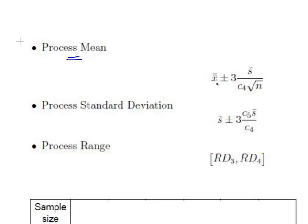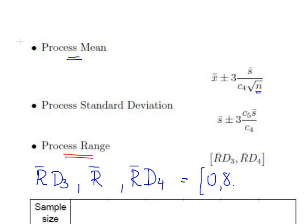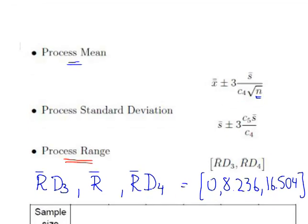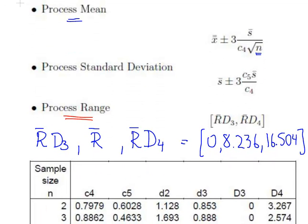The process mean is X double bar plus or minus 3 times S bar over C4 square root of N. What we have to do is essentially find out what N is. Our best line of attack is using the process range: R bar D4, R bar D3. We're also given R bar and R bar D4. That is 0, 8.236, and finally 16.504. That is what we have to work with so far.